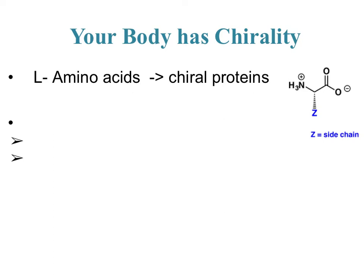One thing we know to be chiral is amino acids. The ones that are active in your body are all L amino acids — they have a particular stereochemistry. As shown, you've got the amino part on the left, the carboxylic acid part on the right, and the side chain coming down, which is what makes amino acids different. It's always going to be going away from you, with a hydrogen coming towards you, because it's a chiral center with four things attached.